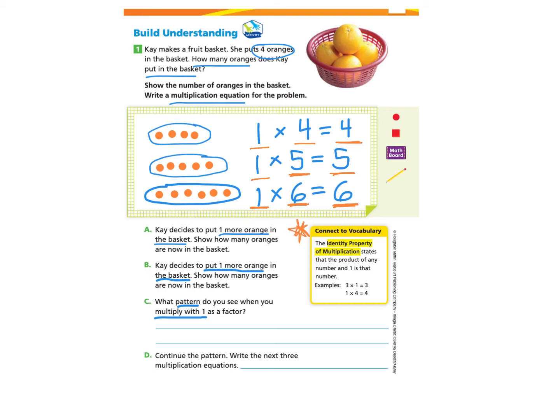And that's the connect to vocabulary for today. The identity property states that the product of any number and 1 is that number. They give some examples here, and you'll notice that the order doesn't matter. 3 times 1 makes 3 and 1 times 4 makes 4. So we can explain our thinking by writing the product is always the same as the other factor.